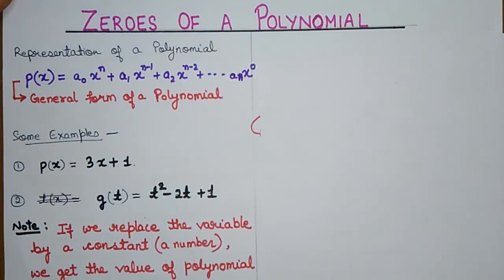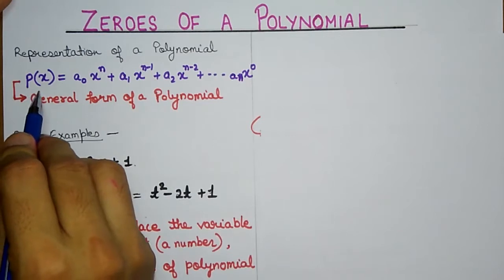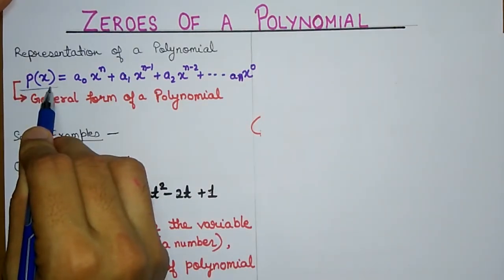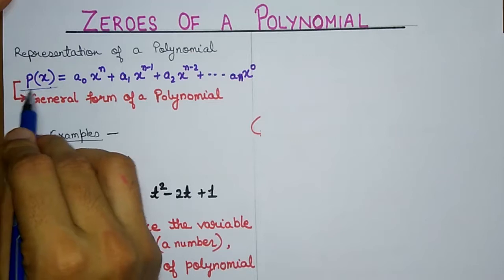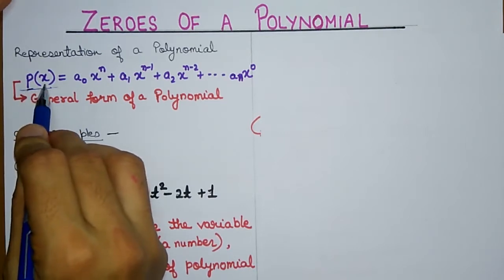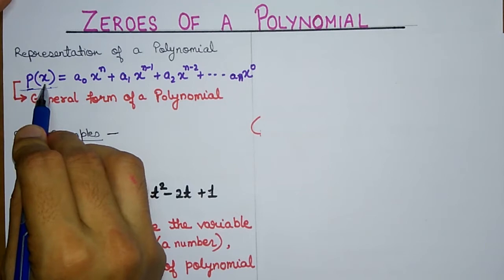Representation of a polynomial — children, you all know the general representation of a polynomial. When you represent a polynomial, you represent it as P(x). What is P? It's a name — like my name is Bhupesh, your name is Rohan, Mohan, Sohan — something like that. So P is the name of that polynomial. This X signifies the variable present in that polynomial.